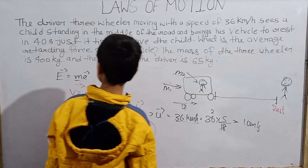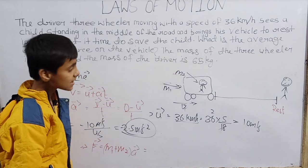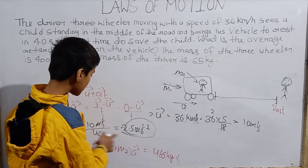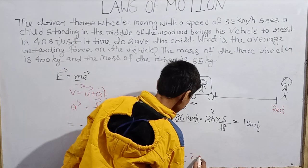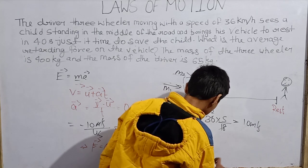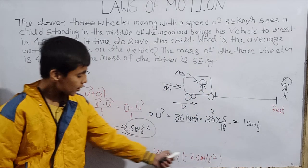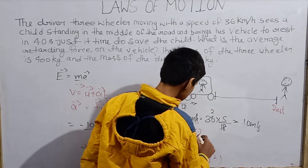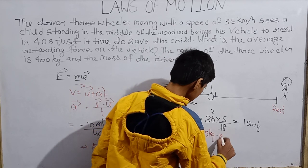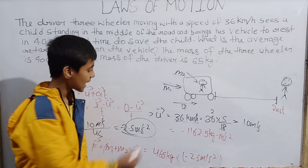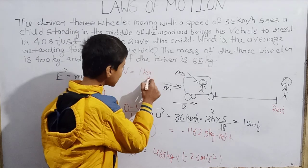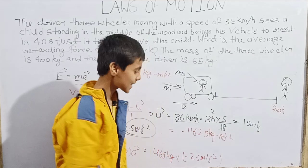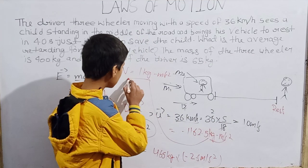Total mass = M1 + M2, where M1 (three-wheeler) is 400 kg and M2 (driver) is 65 kg, giving 400 + 65 = 465 kg. Multiplying by acceleration: F = 465 × (−2.5) = −1162.5 kg·m/s². Since 1 Newton = 1 kg·m/s², the force is −1162.5 Newtons.